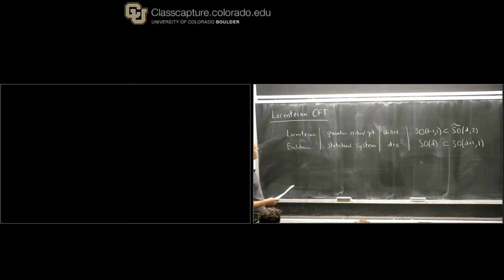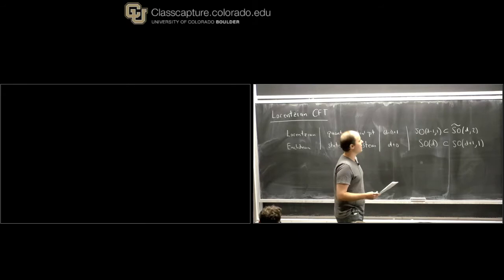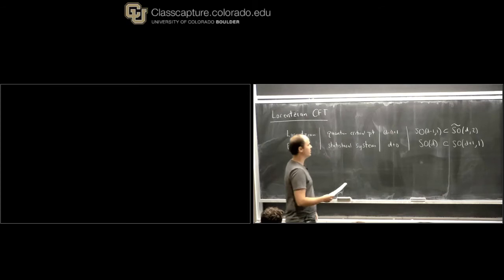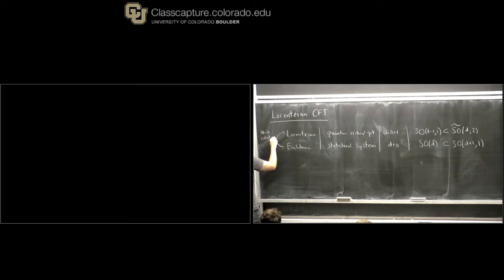Meanwhile, Euclidean CFTs describe equilibrium statistical systems at criticality. They have D spatial directions, zero time directions, and their symmetry group includes SO(D), the rotation group in D dimensions. In principle, we don't have to study these subjects separately because Euclidean and Lorentzian CFTs — and more generally quantum field theories — are related to each other by Wick rotation, which is a way of analytically continuing correlation functions from Euclidean signature to Lorentzian signature and back.